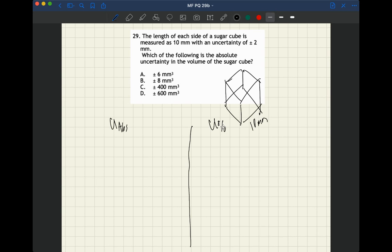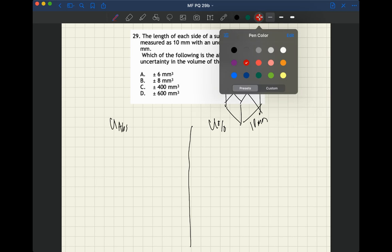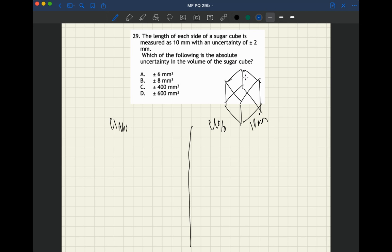So let's first break this down in terms of the percent uncertainty. So we want the volume of this cube and volume is length times width times height and that's 10 times 10 times 10 or 1000 cubic millimeters.